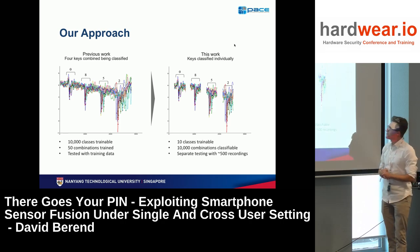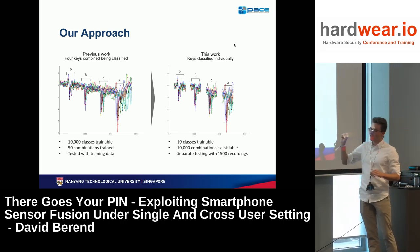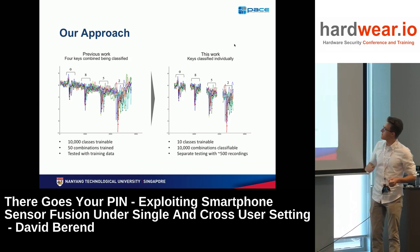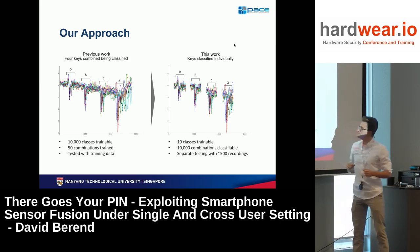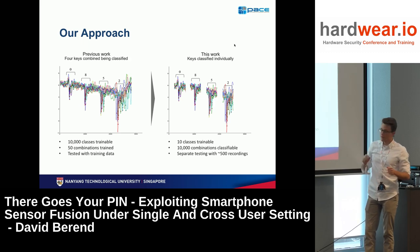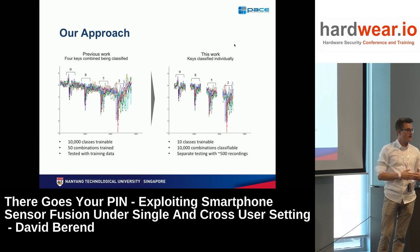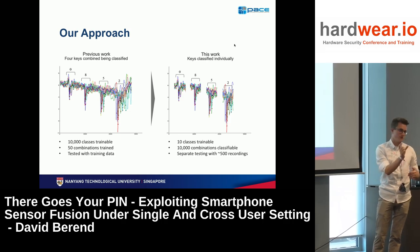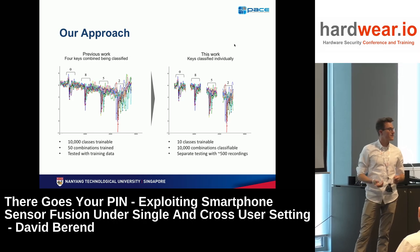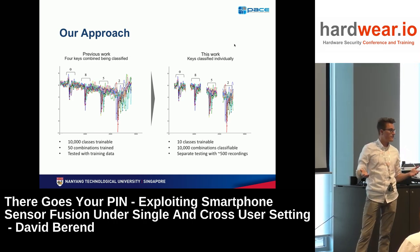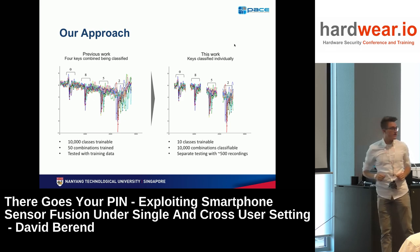We thought: why not look at each key individually and cut it? That leaves you with just 10 classes — digits 0 to 9 — rather than 10,000 classes if you look at the whole pin. But you are still able to classify all 10,000 combinations of a 4-digit pin, as you just look at each digit individually.